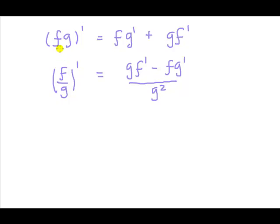Now let's review the formulas. For the product rule, we want the derivative of the product of two functions — that is equal to fg — which equals f times the derivative of g plus g times the derivative of f. And it doesn't matter which way around you've got it, so I could put this as the first term and this as the second term.